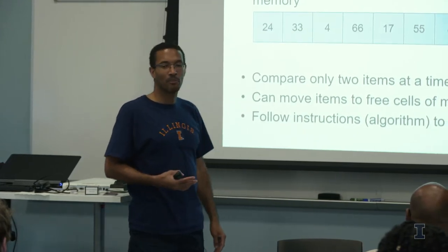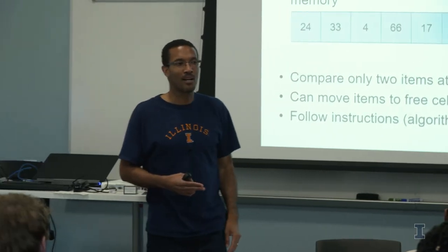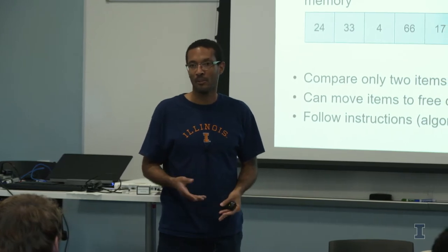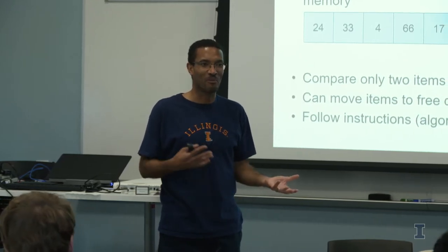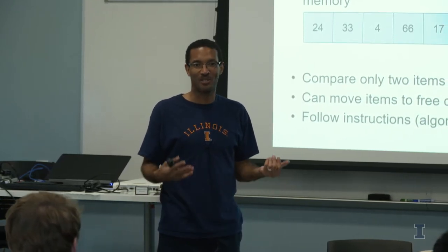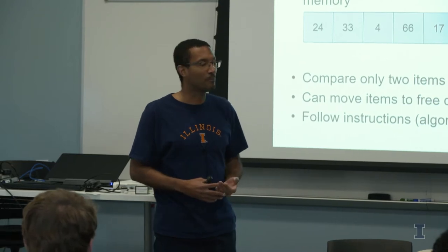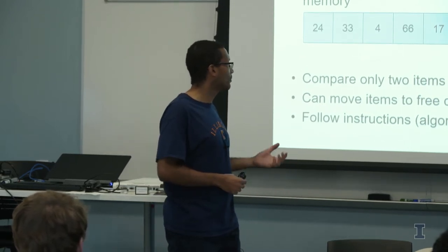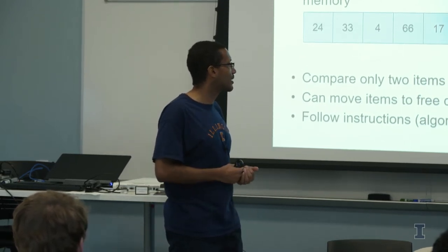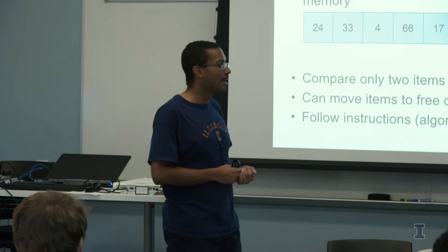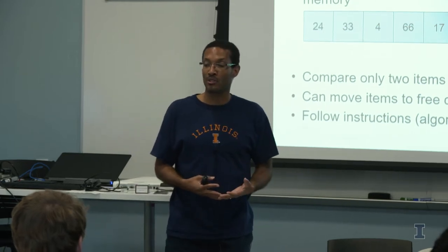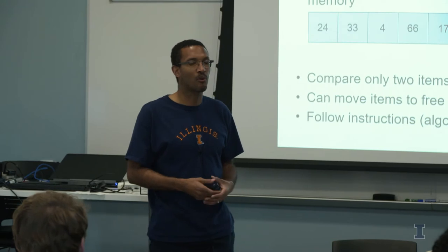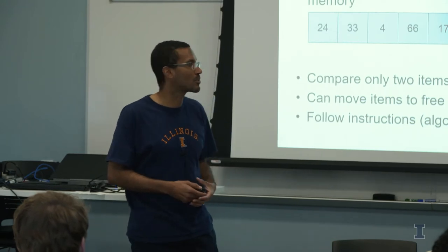The computer can only compare two items at a time. The computer is going to use the less-than operator. When you ask does this letter come before this, you're doing a less-than comparison. You can move items to free cells in memory. The computer is going to follow a set of instructions, known as an algorithm, in order to perform the task of sorting.